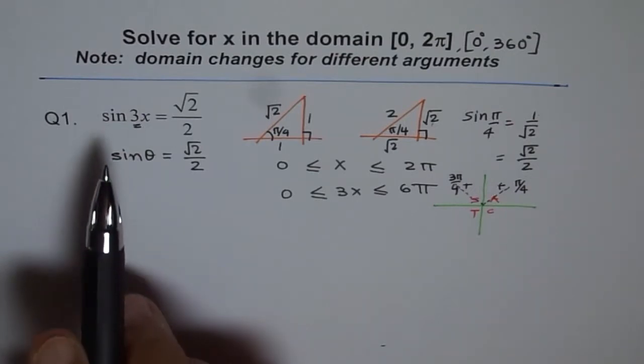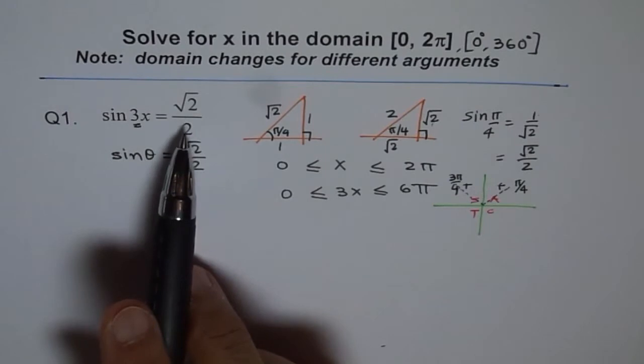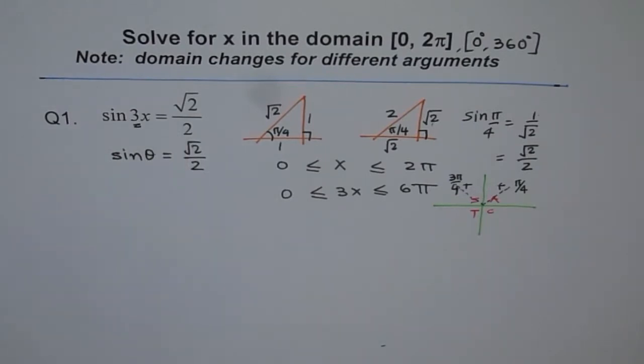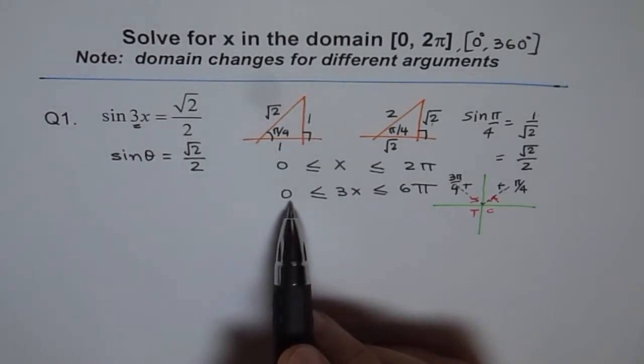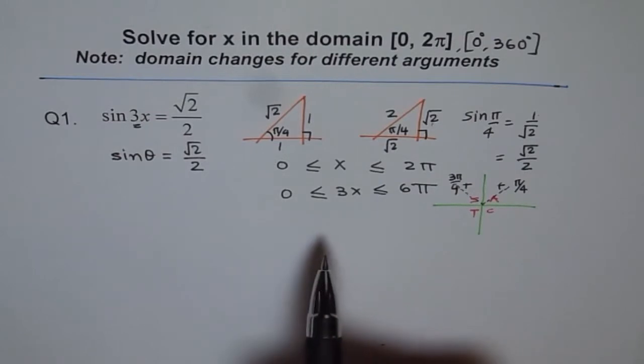The question is not sin x equals square root 2 over 2. The question is sin 3x. Do you get the point? And for 3x, the domain actually changes to 0 to 6π.